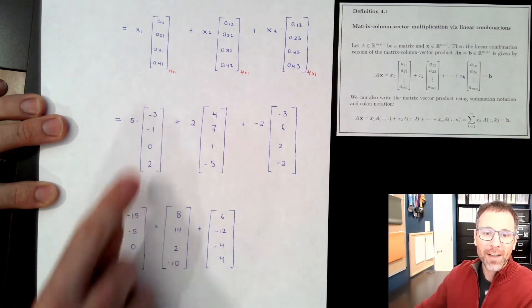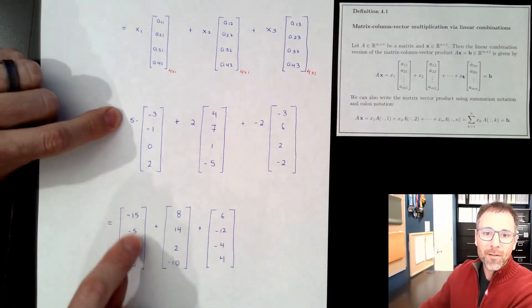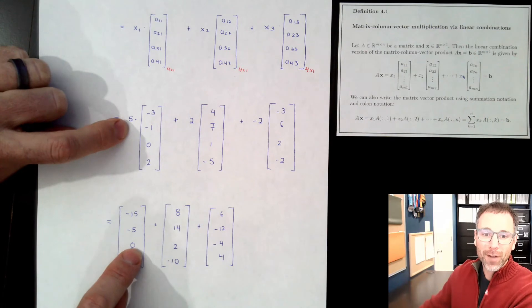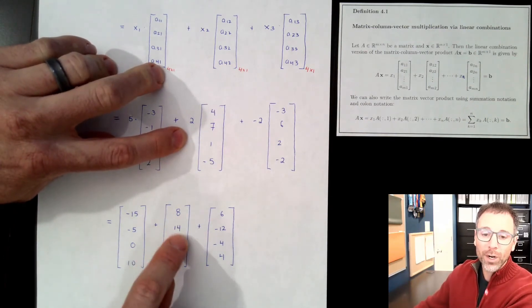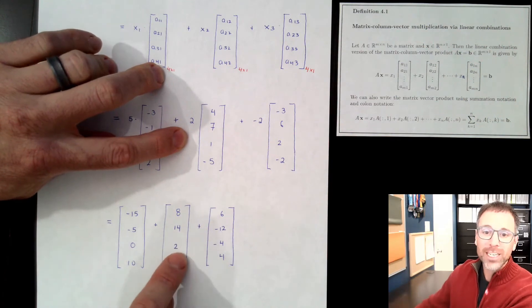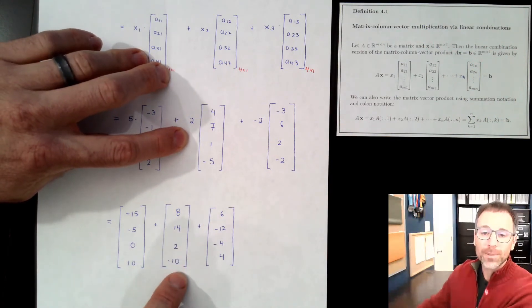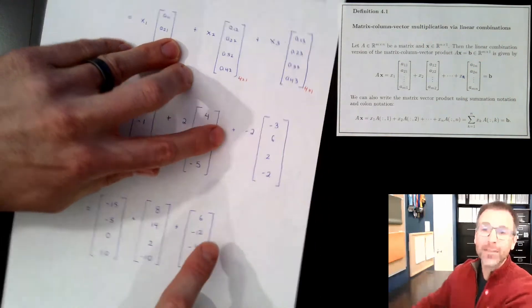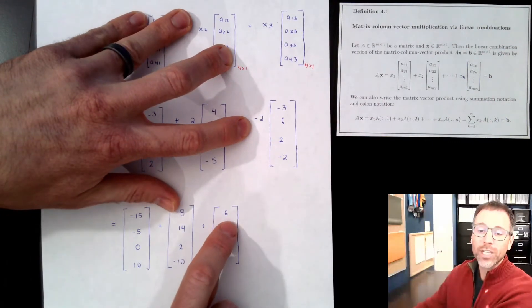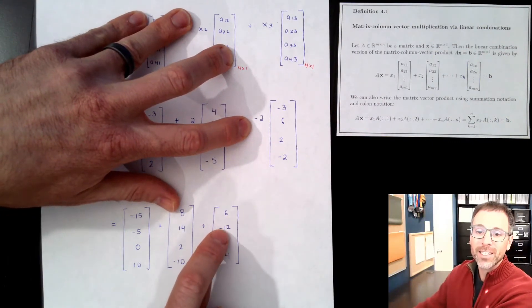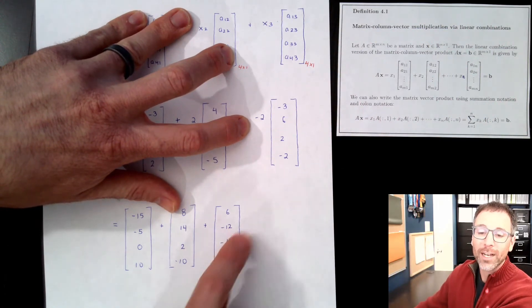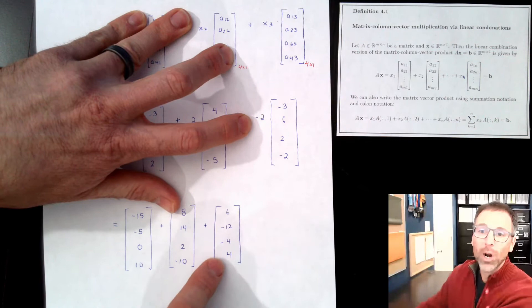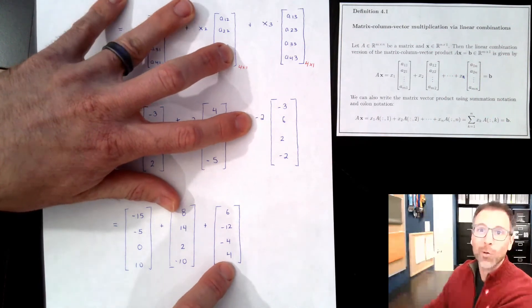So 5 times negative 3 is negative 15. 5 times negative 1 is negative 5. 5 times 0 is 0. 5 times 2 is 10. Here we've got 2 times 4 is 8. 2 times 7 is 14. 2 times 1 is 2. 2 times negative 5 is negative 10. Over here, negative 2 times negative 3 is positive 6. Negative 2 times 6 is negative 12. Negative 2 times 2 is negative 4. Negative 2 times negative 2 is positive 4.